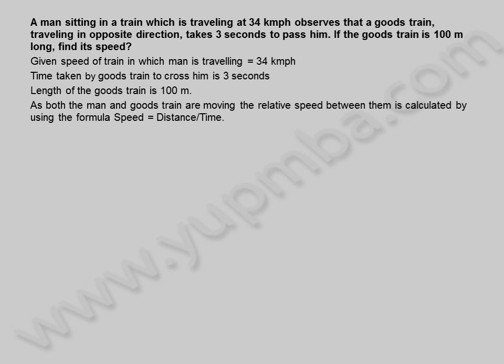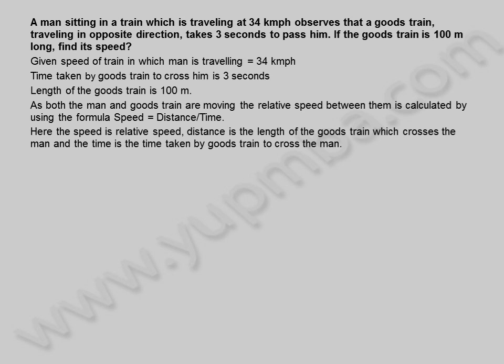As both the man and goods train are moving, the relative speed between them is calculated by using the formula speed is equal to distance by time. Here the speed is relative speed, distance is the length of the goods train which crosses the man, and the time is the time taken by goods train to cross the man.